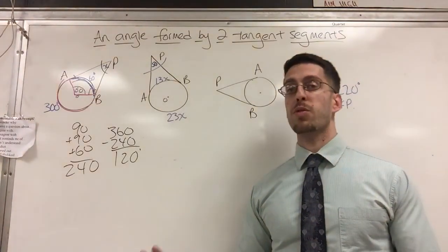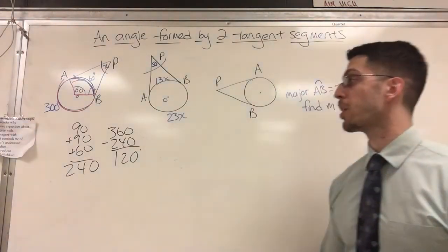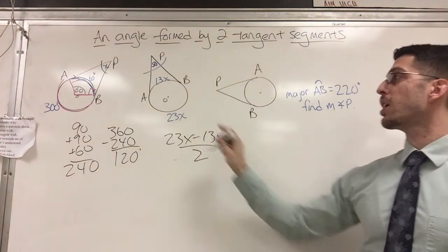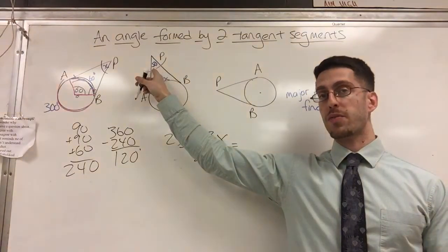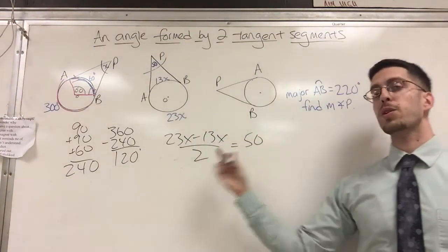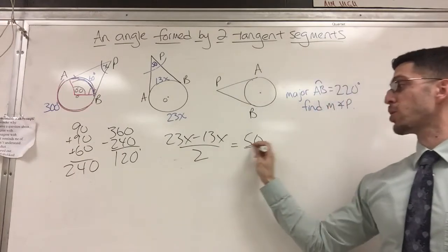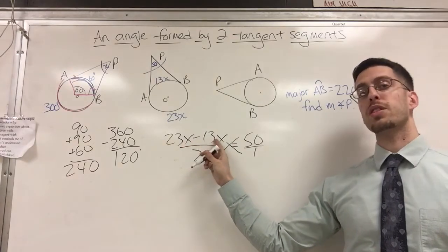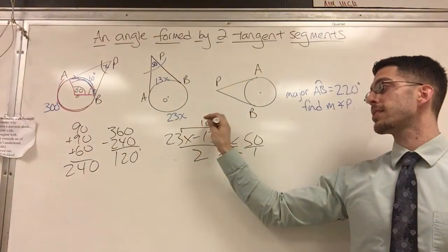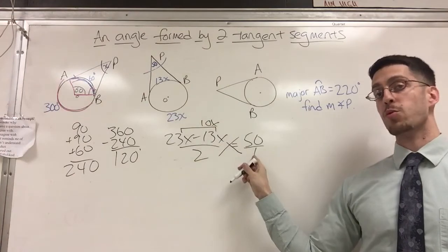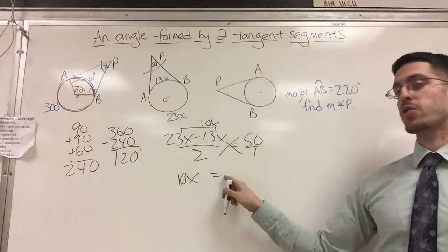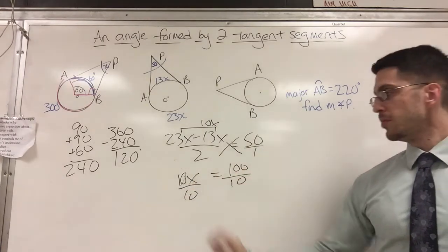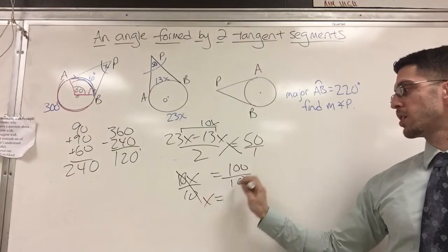Here, it might be a little more confusing to do it this way, so I'm going to use my formula. I'm going to go with major minus minor divided by 2 equals the angle, which was given as 50 degrees. Oh, what do I do? This is crazy algebra. Not that crazy. Put this over 1, cross multiply. If I go this way first, 23x minus 13x, I can combine immediately and say that's 10x. 10x times 1 is still 10x. Equal sign drops down. 50 times 2 is 100. Divide by 10.